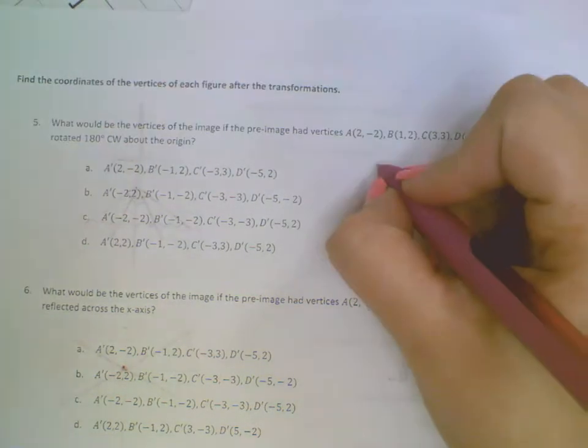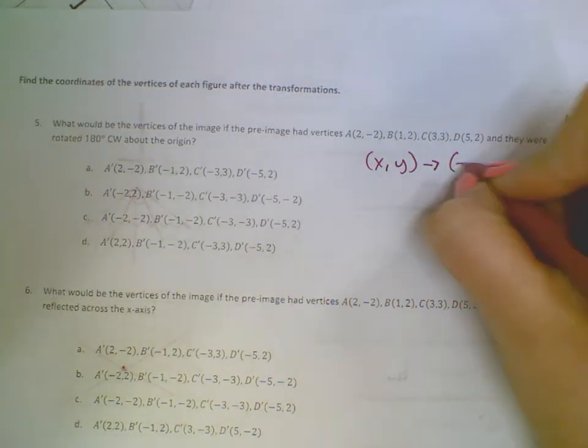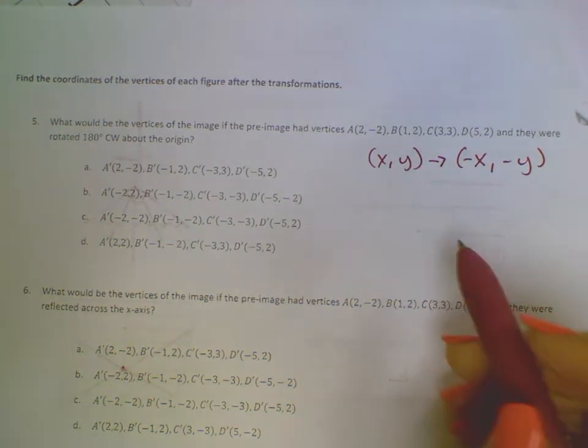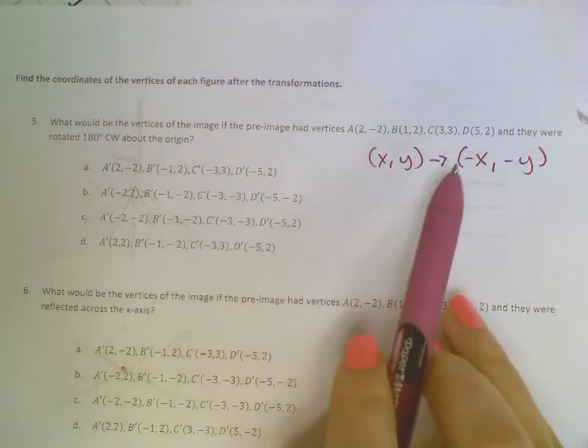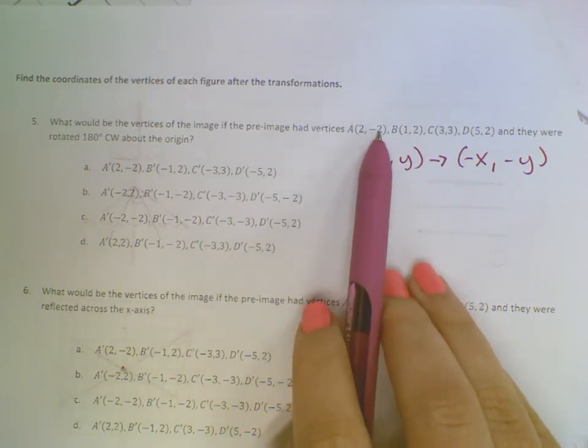So my rule for that, 180 degrees, find the opposite of both, leave the x, leave the y. So for 180 degrees, all that's happening is your signs are changing. So instead of it being 2, negative 2, it will be negative 2, positive 2.